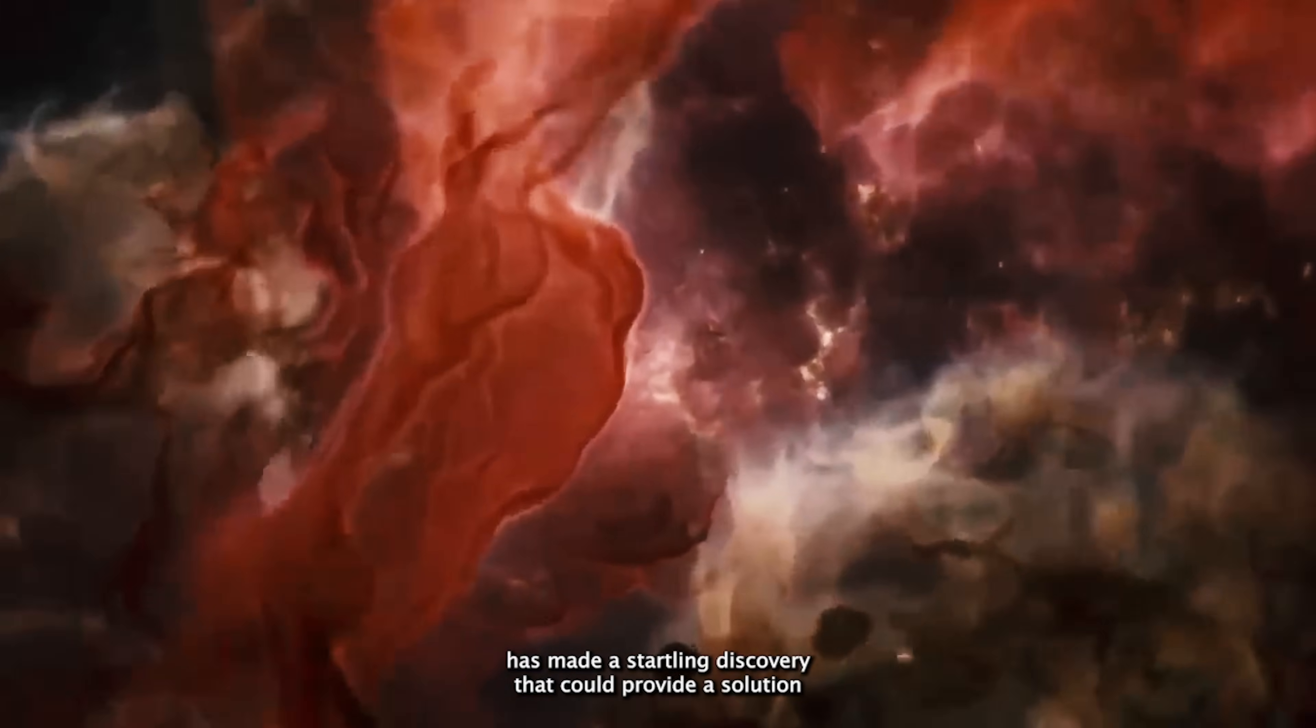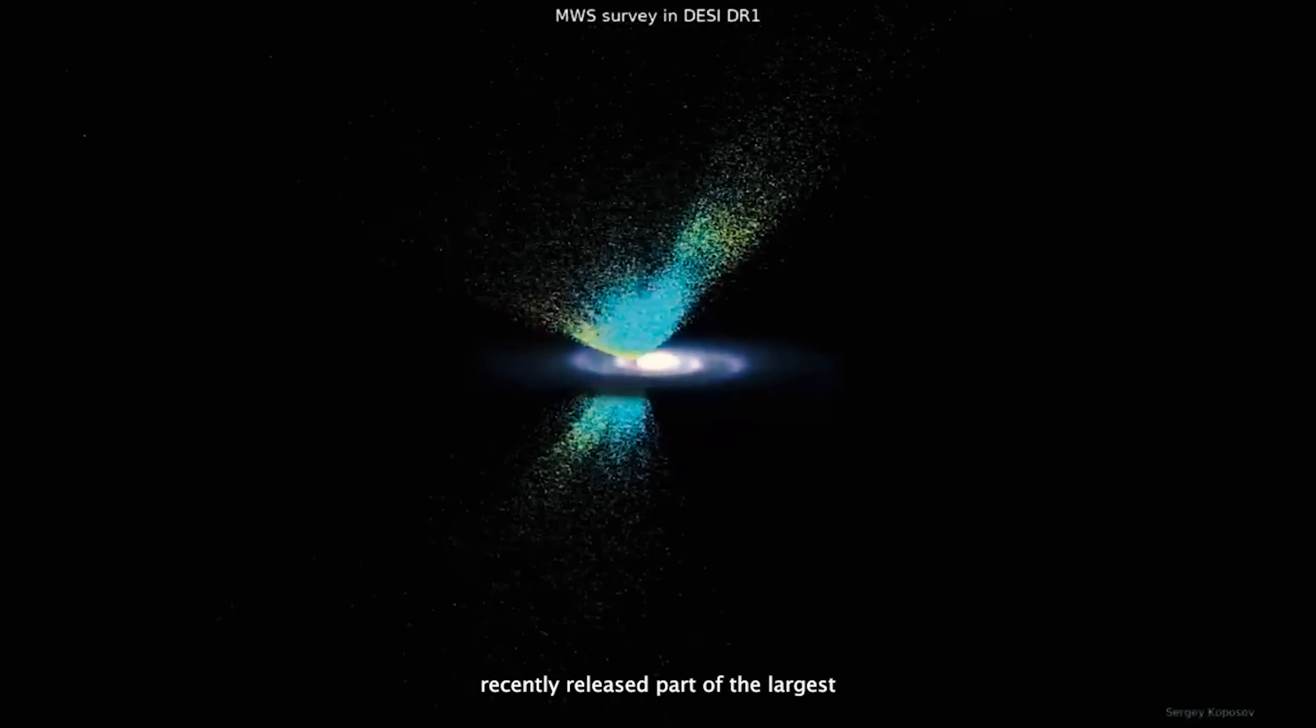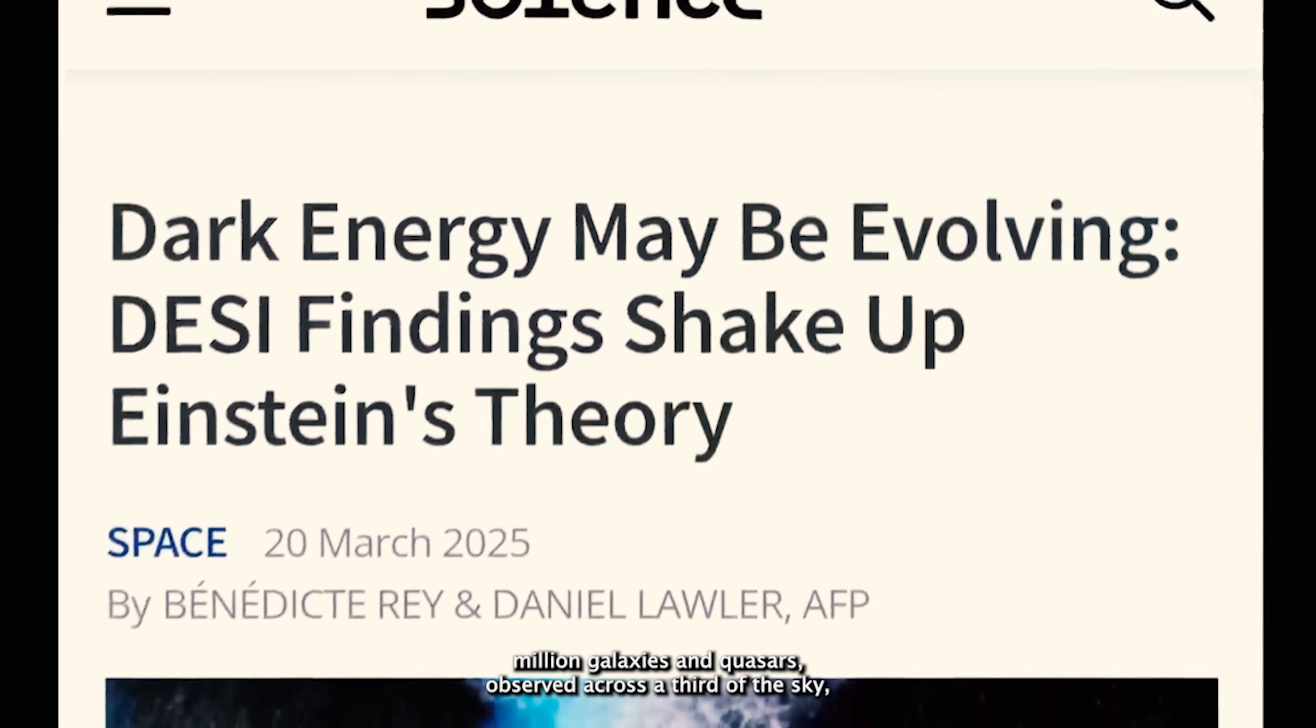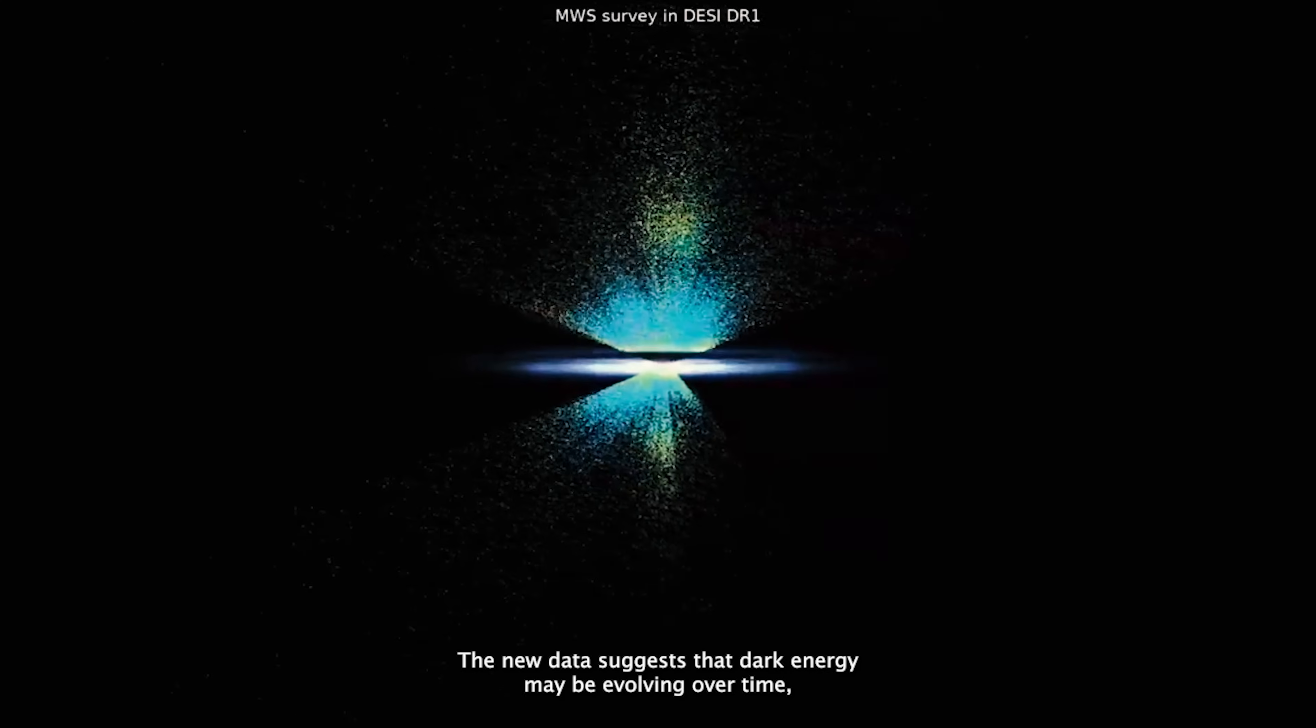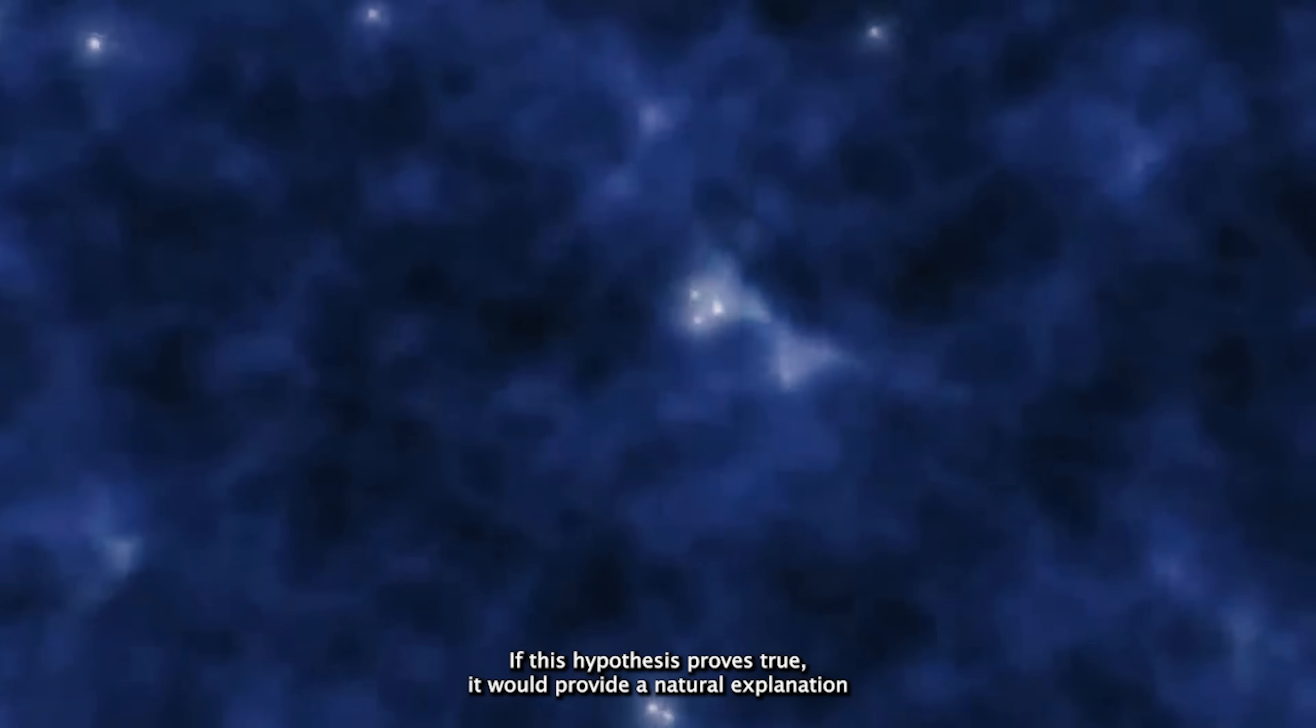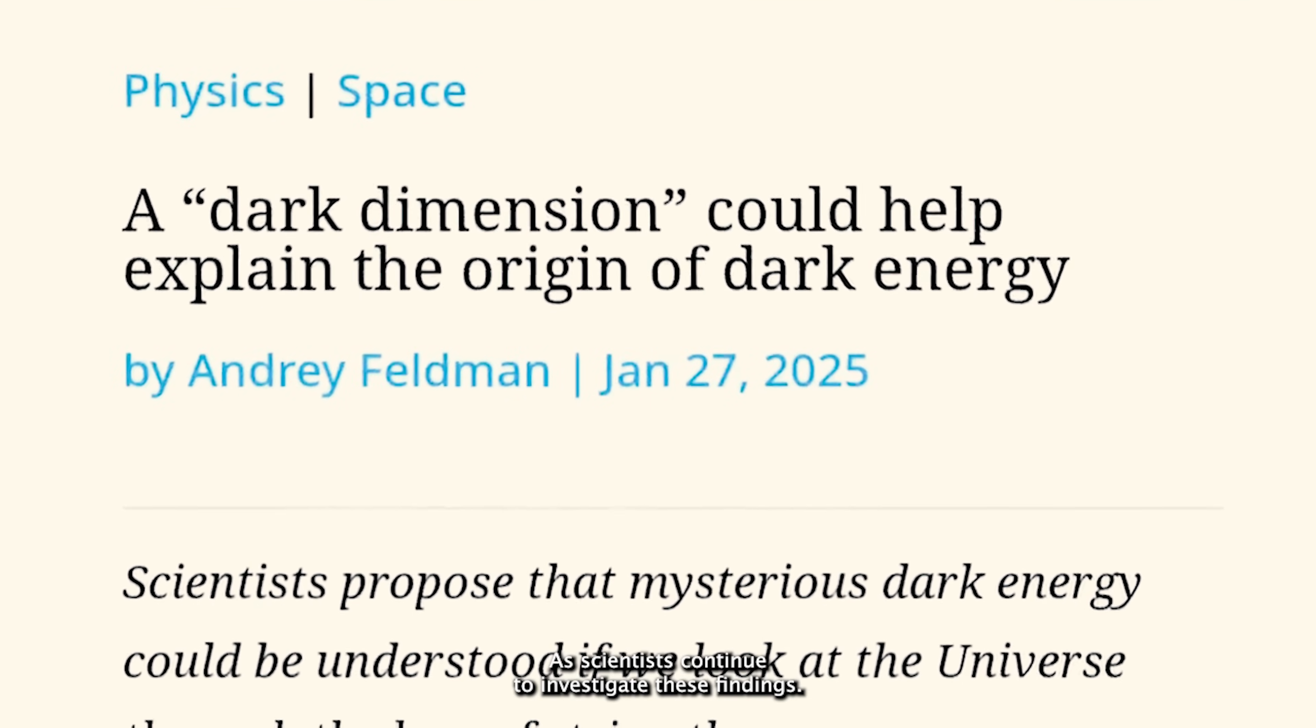In light of these developments, a group of astronomers has made a startling discovery that could provide a solution to the ongoing cosmological crisis. The Dark Energy Spectroscopic Instrument Collaboration recently released part of the largest 3D map of the universe ever created. This map, based on data from 6.4 million galaxies and quasars observed across a third of the sky, spans back to 1.5 billion years after the Big Bang. The new data suggests that dark energy may be evolving over time, which could fundamentally change our understanding of the universe. If this hypothesis proves true, it would provide a natural explanation that could resolve many of the challenges in cosmology. These revelations have the potential to reshape our view of the universe.